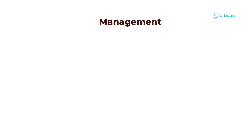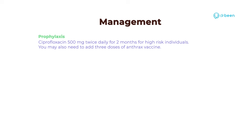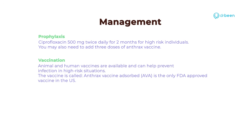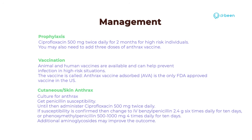How do we manage it? For prophylaxis, administer ciprofloxacin 500 mg twice daily for 2 months for high-risk individuals. You may also need to add 3 doses of anthrax vaccine. Animal and human vaccines are available; the vaccine is called anthrax vaccine adsorbed (AVA) and is the only FDA-approved vaccine in the US. For skin anthrax: culture for anthrax and get penicillin susceptibility. Until then, administer ciprofloxacin 500 mg twice daily. If susceptibility is confirmed, change to IV benzylpenicillin 2.4 g six times daily for 10 days, or phenoxymethylpenicillin 500–1000 mg four times daily for 10 days. Additional aminoglycosides may improve the outcome.